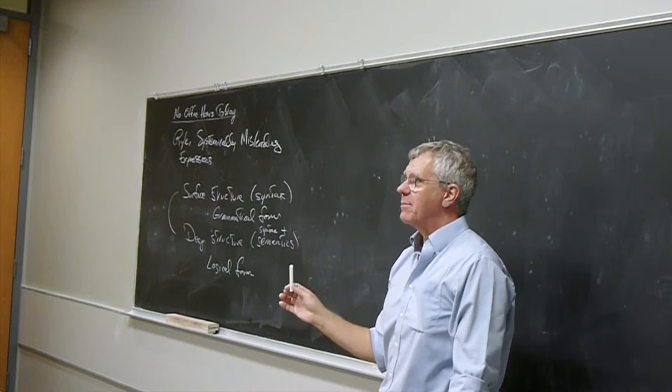This leads to the next problem: descriptions themselves are also systematically misleading. That's the point of Russell's 'On Denoting.' If I say 'the present king of France is bald,' I am not positing an object — the present king of France — and then saying that object is bald, as I would be if I said 'Jonathan Dancy is bald.'